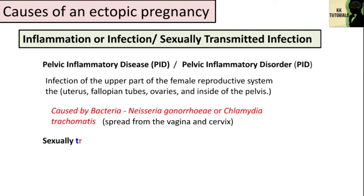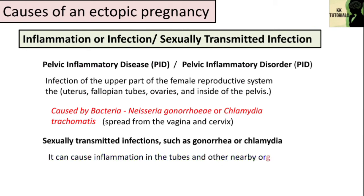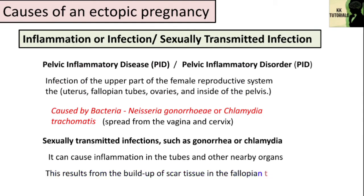Sexually transmitted infections such as gonorrhea or chlamydia can cause inflammation in the tubes and nearby organs, increasing the risk of ectopic pregnancy. This results from the buildup of scar tissue in the fallopian tubes, causing damage to cilia. If both tubes were completely blocked so that sperm and egg were physically unable to meet, then fertilization would be impossible and neither normal nor ectopic pregnancy could occur.